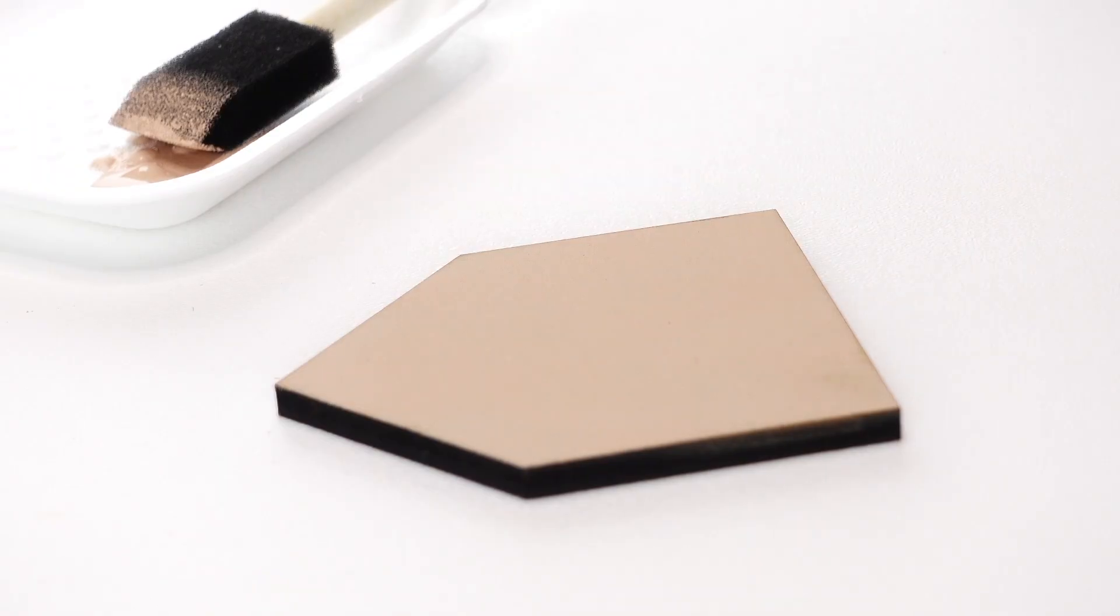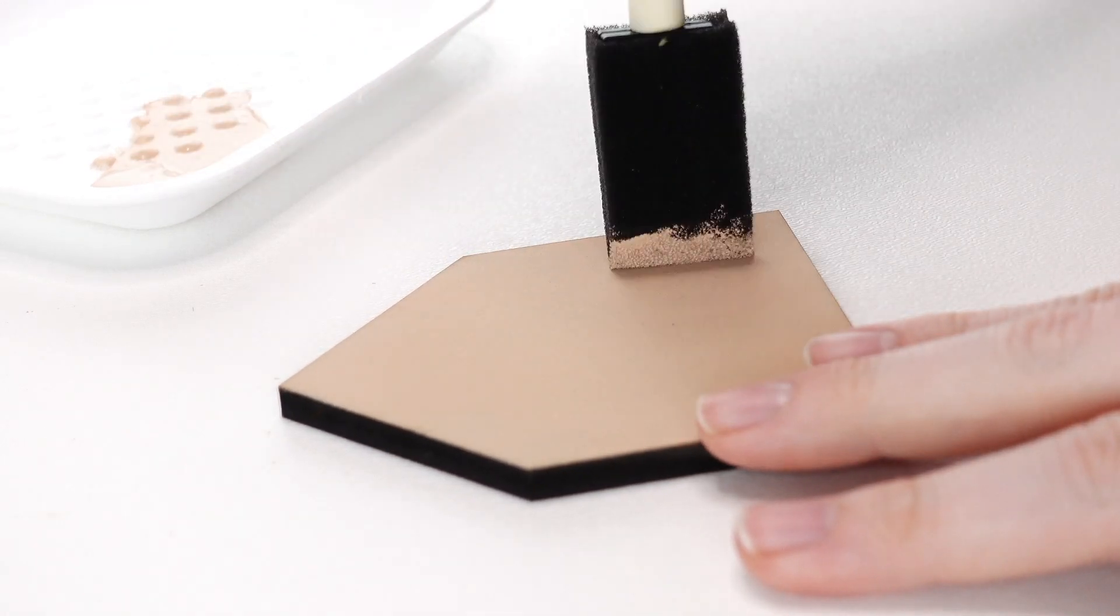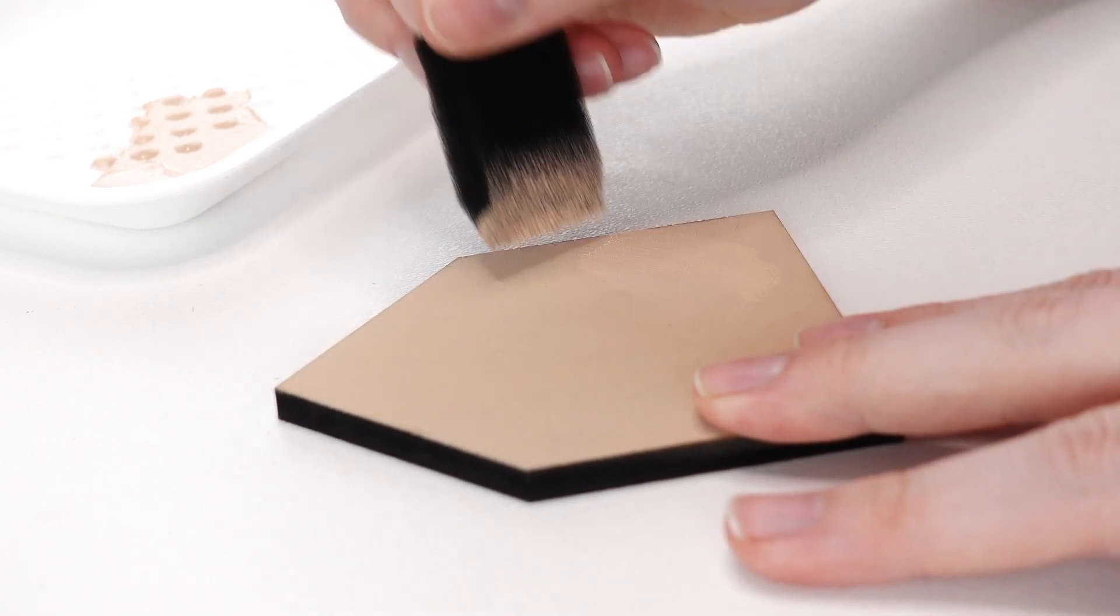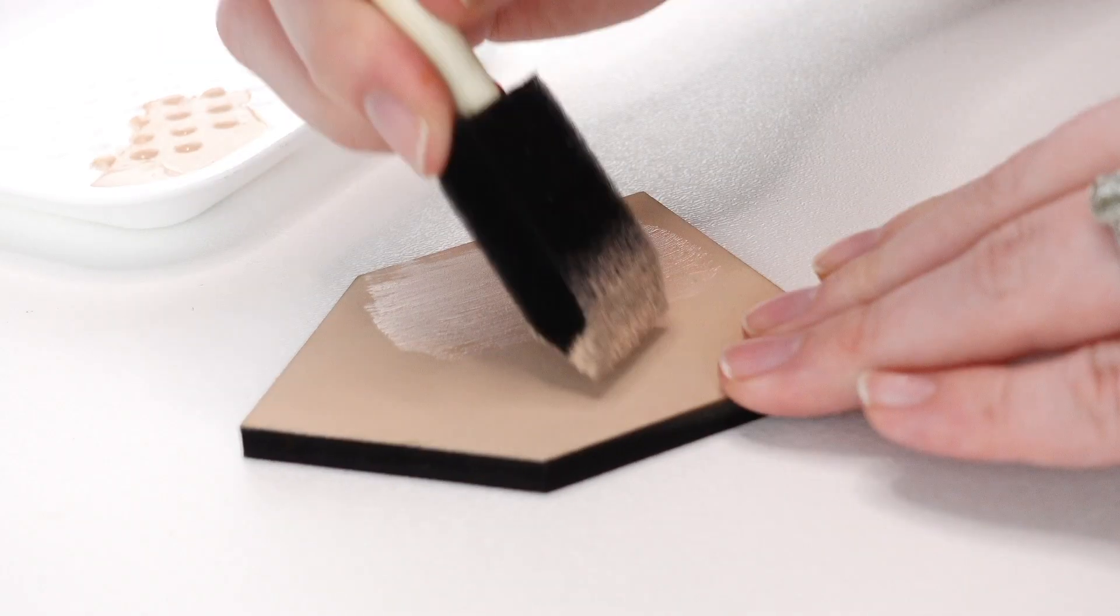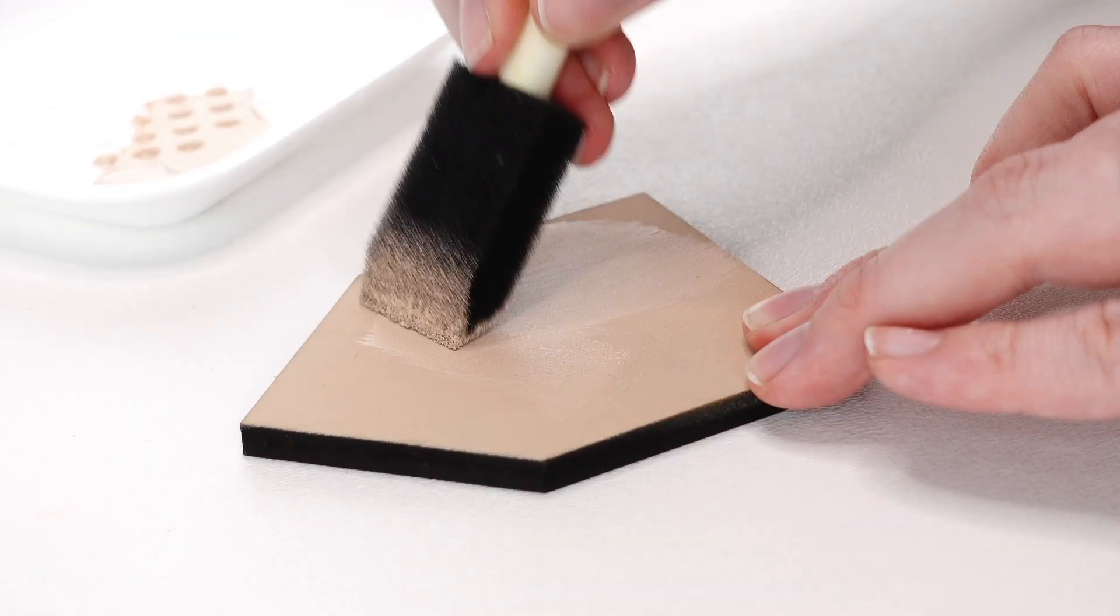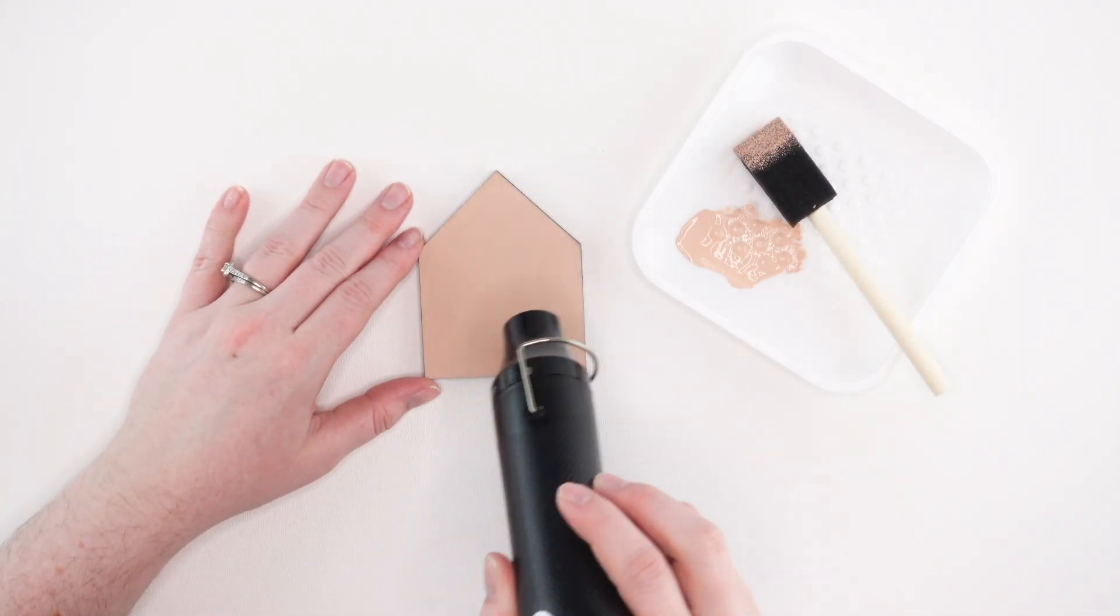Don't be worried if you aren't getting full coverage on your inserts or pieces in one coat. We usually do two to three coats depending on the color and the paint that we're using. Just be sure to wait until your paint is fully dried before adding another coat. If you're working in thin light coats, it should only take a few minutes for the paint to dry. You can always speed up the drying process with a heat gun.